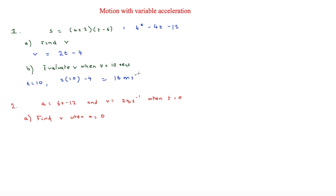The next question says acceleration a = 6t − 12, and that velocity v = 2 meters per second when t = 0. We have this extra information so we can work out the constant of integration. It asks us to find v when a = 0, but first we need an expression for v. Integrating a = 6t − 12 gives v = 3t² − 12t + c.